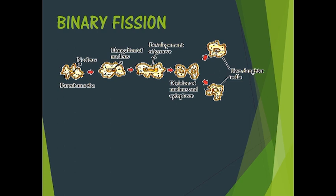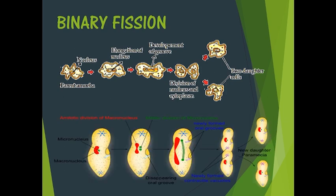Let's take the case of amoeba. The first step is the cell gets elongated; the nucleus gets elongated in size. The next step is it begins to divide. The nucleus divides, then the cytoplasm divides, and the plasma membrane begins to divide. Eventually it separates and you finally get two daughter cells. This is the process of binary fission. The exact same process is followed by paramecium as well, where division happens along the transverse plane, and in the end you get two daughter paramecia.